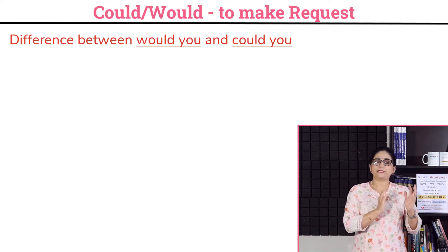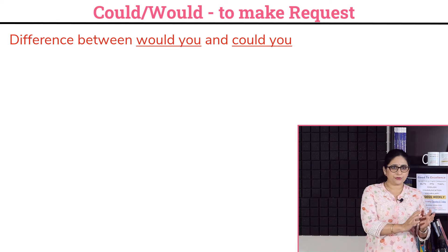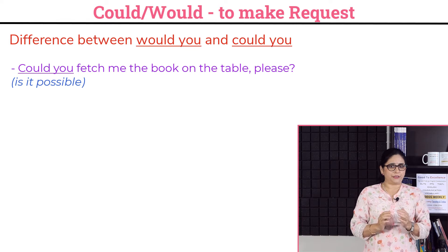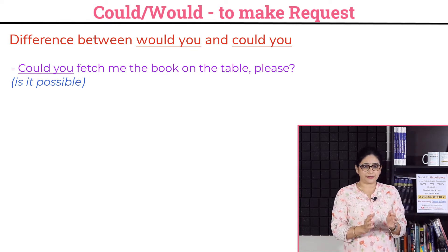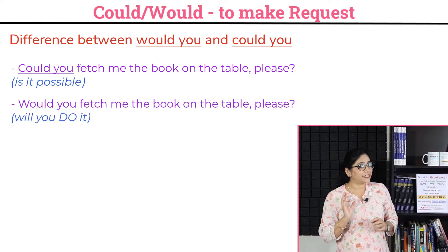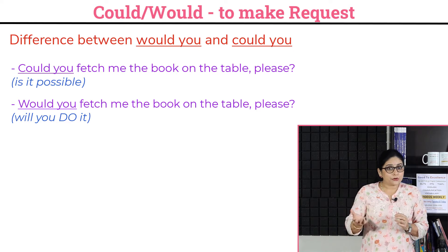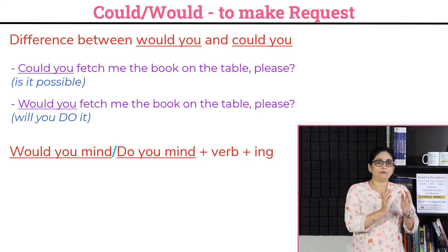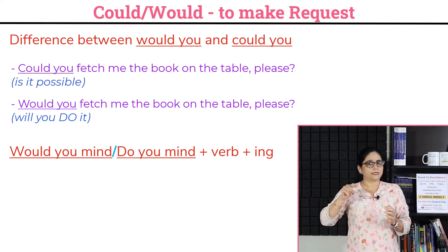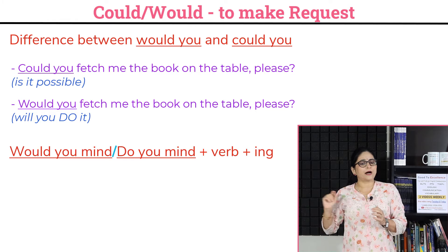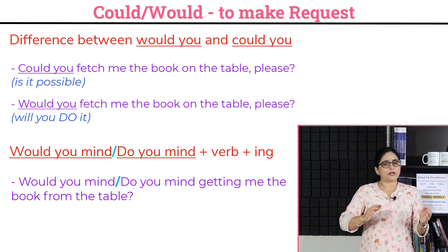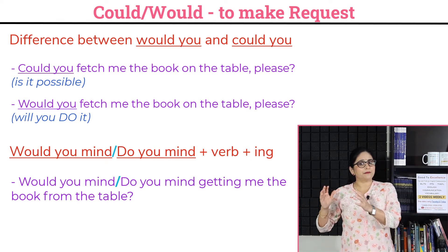Now let's see the difference between 'would you' and 'could you.' 'Could you fetch me the book on the table please?' means 'Is it possible?' whereas 'Would you fetch me the book on the table please?' means 'Will you do it?' For 'would you mind' or 'do you mind,' we use it plus the verb in the -ing form: 'Would you mind getting me the book from the table?'